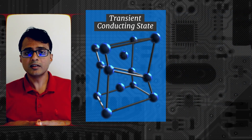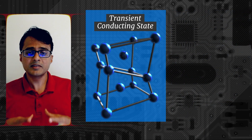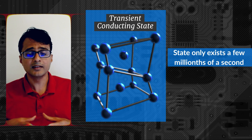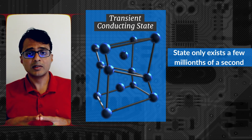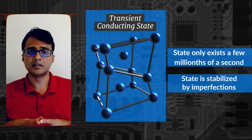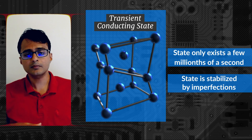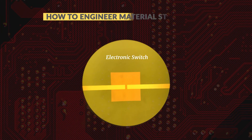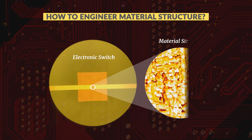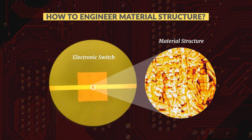Remarkably, this novel state, which exists only for a few millionths of a second, is stabilized by imperfections which invariably exist inside the material. So our challenge now is to think of ways to intentionally engineer disorder in materials, so that these new kinds of states are made more stable.